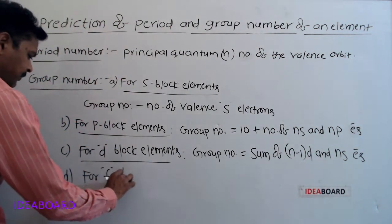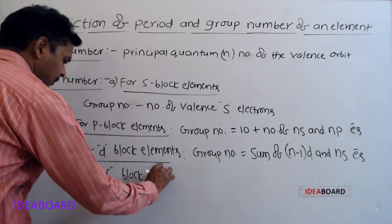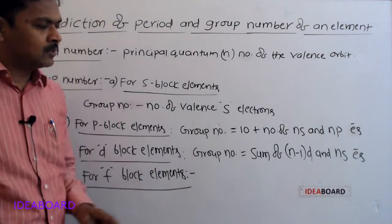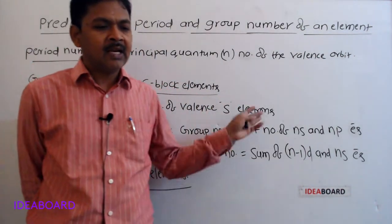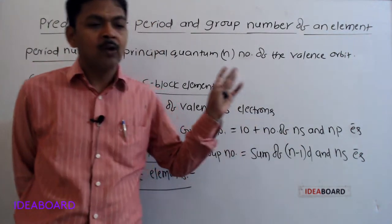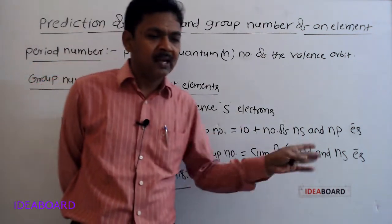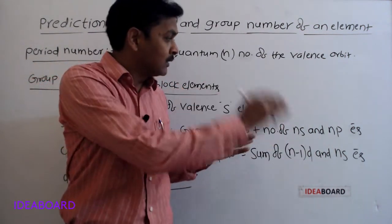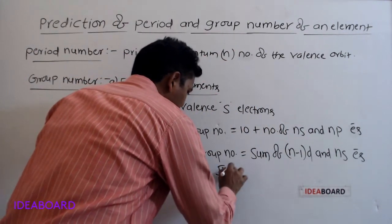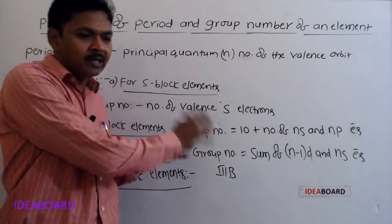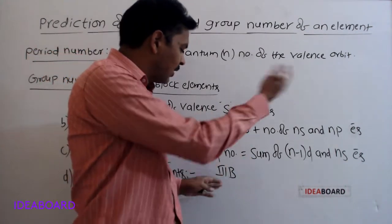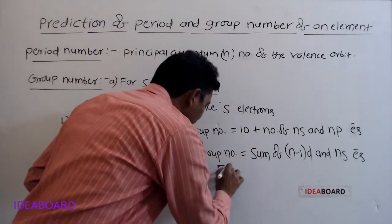For f block elements, no need to apply any formula. Directly we can tell the answer, because in the periodic table, all f block elements belong to the third B group only. In the modern periodic table, all f block elements are placed in the third B group only. After s block, first s block contains two groups — first and second group elements. After s block, next is d block, and in that d block, the first group is the third B group.